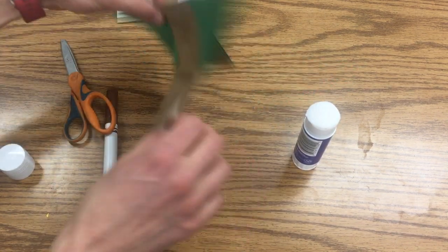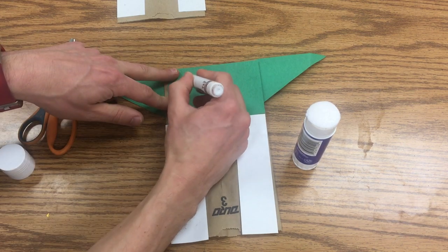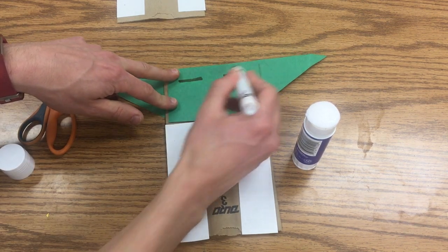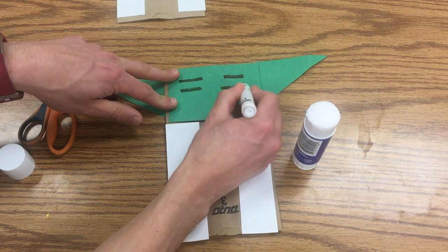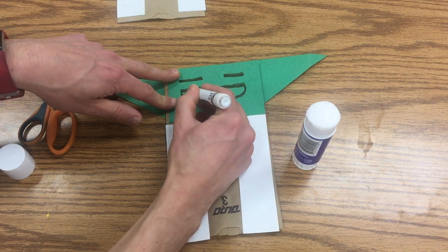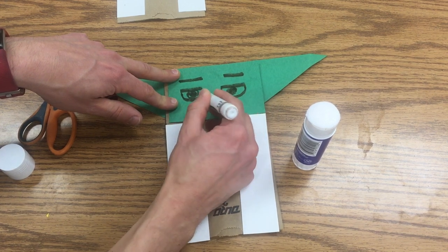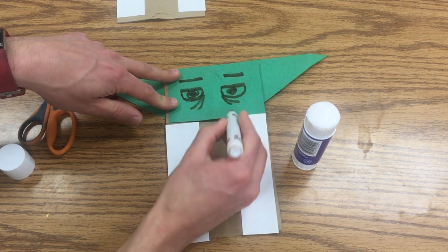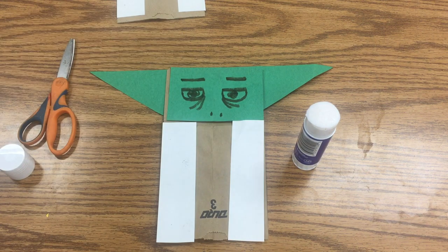Then I turn over and I make his eyes. So I'm just gonna make two lines for his eyebrows, two lines for the top of his eyes. Then I make this little scoop and then you can fill this in with a circle, and then you can give him his little eye bags and his nostrils. And there's Yoda.